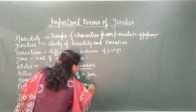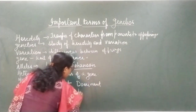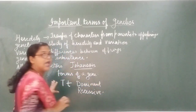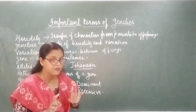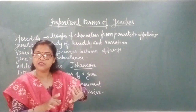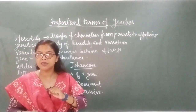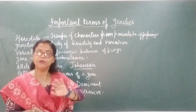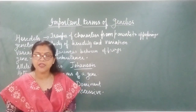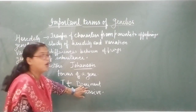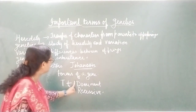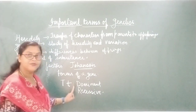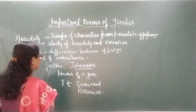These two forms are called dominant and recessive. Dominant means the character which is seen, and recessive means the character which is masked — that is, it is hidden. So in each gene, the two allele forms are dominant and recessive.